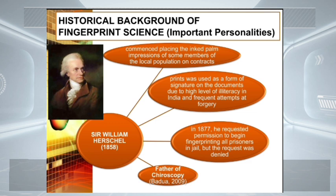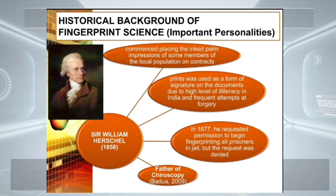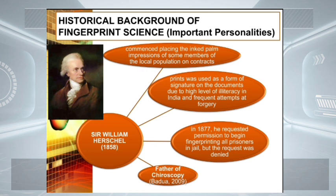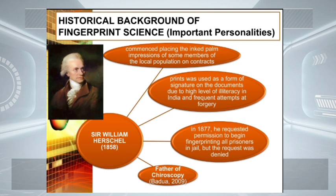Another personality is Sir William Herschel. In 1858, in the Hooghly district of Bengal, India, he began the first known official use of fingerprints on a large scale. He used fingerprints in India to prevent fraudulent collection of army pay accounts and for identification of other documents. The prints were used as a form of signature on documents due to the high level of illiteracy in India and frequent attempts of forgery. The first person Herschel printed appears to have been one Rayadhar Conai. He did not, however, develop a method of classification suitable for general use. In 1877, Herschel requested permission to take the fingerprints of prisoners in jail, but the request was denied. He is considered the father of chiroscopy.